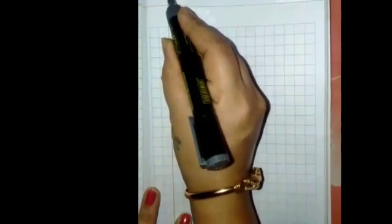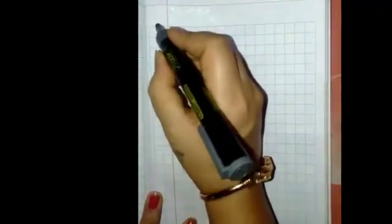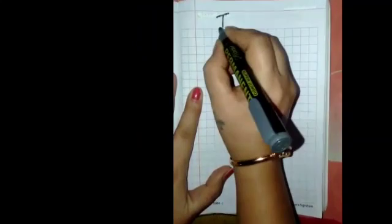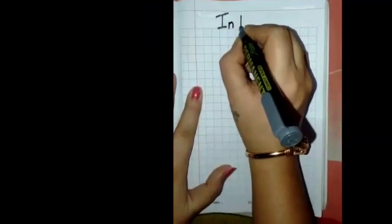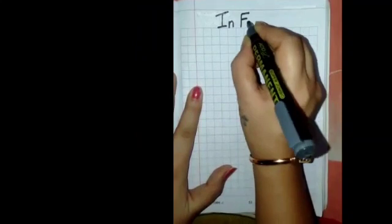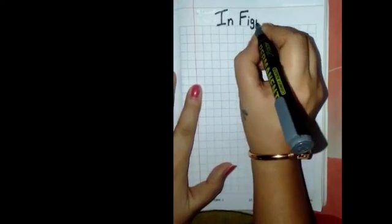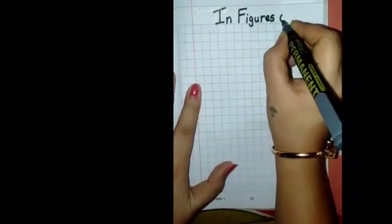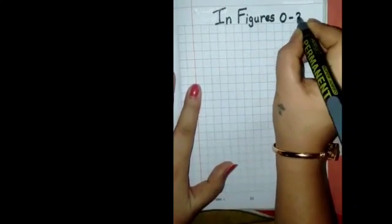This is your red margin line. You will write your date over year on the left hand side. Okay children, you will write your date over year. Over year you will write your heading in figures 0 to 20.